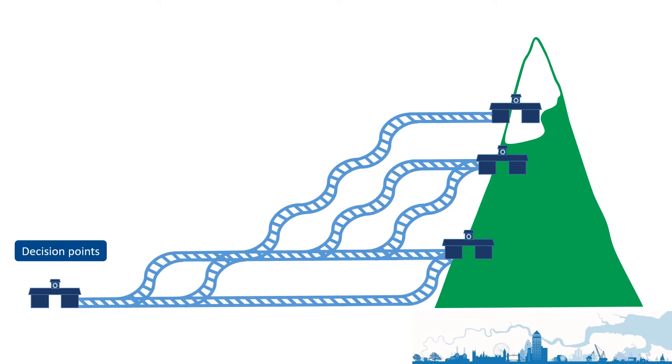You also need to know when to make the decision to change track by identifying the decision points that, once passed, close off certain destinations. You can't decide to journey straight to the top of the mountain if you've already passed the junction that leads there.